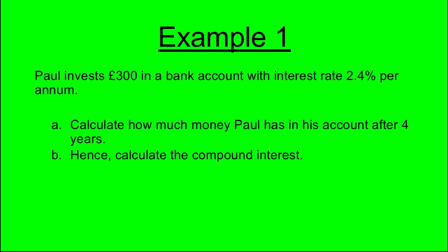Example 1: Paul invests £300 in a bank account with interest rates 2.4% per annum. Part A: Calculate how much money Paul has in his account after 4 years. Part B: Hence, calculate the compound interest.